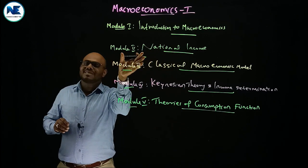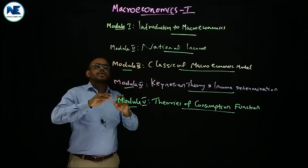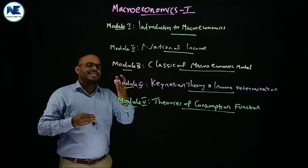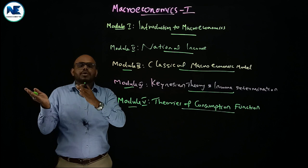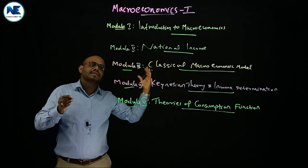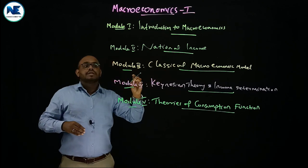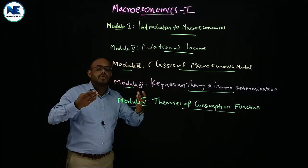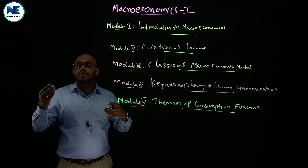National income is separated as one module. The national income measurement and difficulties in measurement of national income form one module. We are also going to talk about money — liquidity preference theory, Fisher's quantity theory of money, Friedman's restatement of quantity theory of money, money supply reduction, and classical dichotomy.